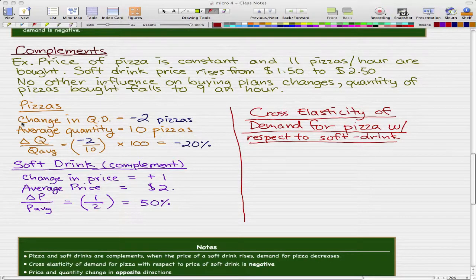So let's take a look at pizzas again. Because the examples are pretty similar, I just wrote them down. So pizzas, let's look at the change of quantity demanded. We start off with 11 pizzas an hour and when the soft drink price rises from 150 to 250, the pizzas bought falls to 9 an hour.